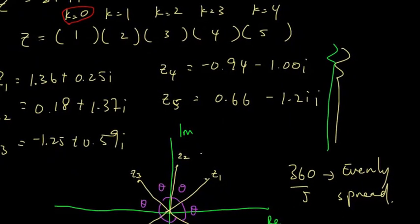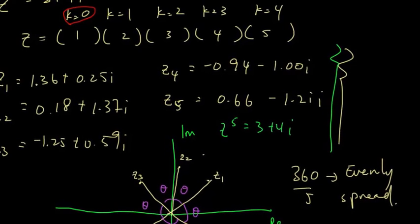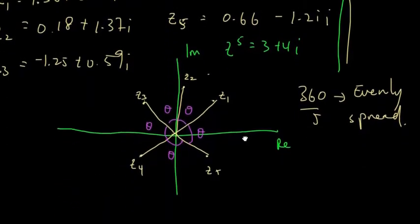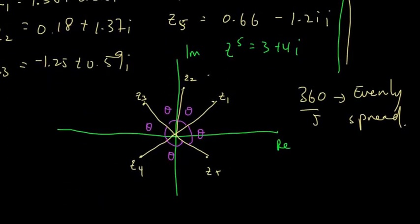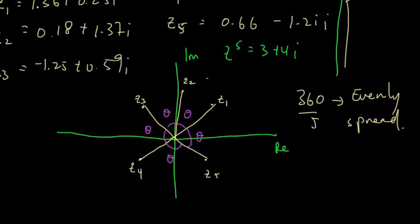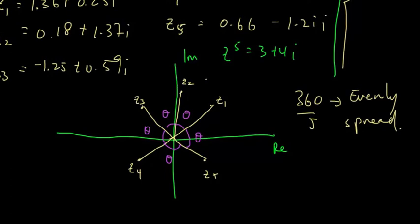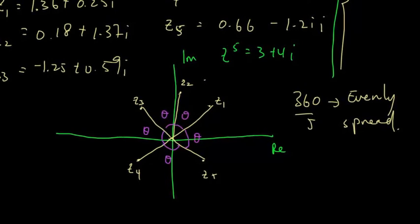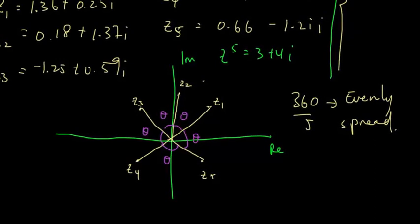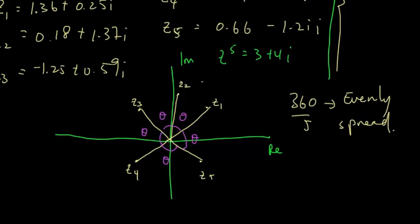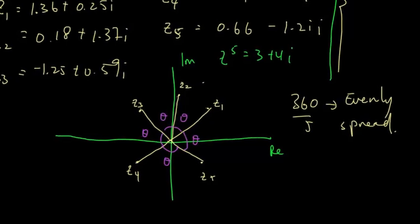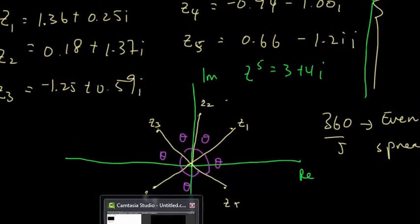If we multiply all of these roots together, we get back z to the 5 equals 3 plus 4i. One cool feature is that all the roots are spread out evenly across the Argand diagram — a good trick to check your answers in exams. I hope you guys understand. If you have any questions, please drop me a message on the discussion board and I'll get back to you as soon as possible. See you in the next lecture.